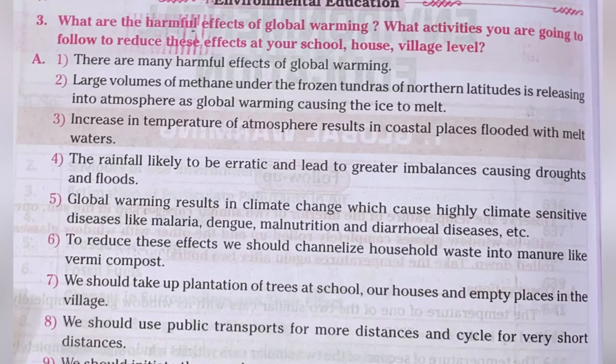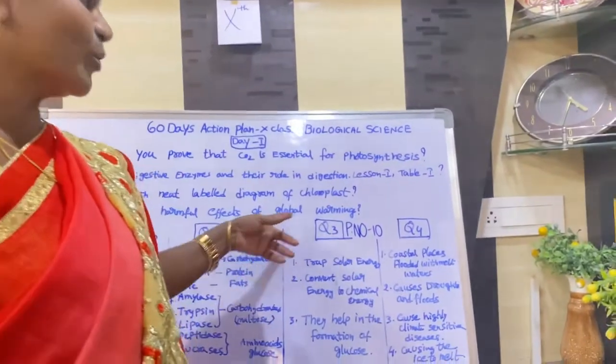To reduce these effects, we should channel household waste into manure like vermicompost. We should take up plantation of trees at schools, our houses, and empty places in the village. We should use public transport for longer distances and cycles for short distances. We should initiate the use of eco-friendly electronic and solar equipment.